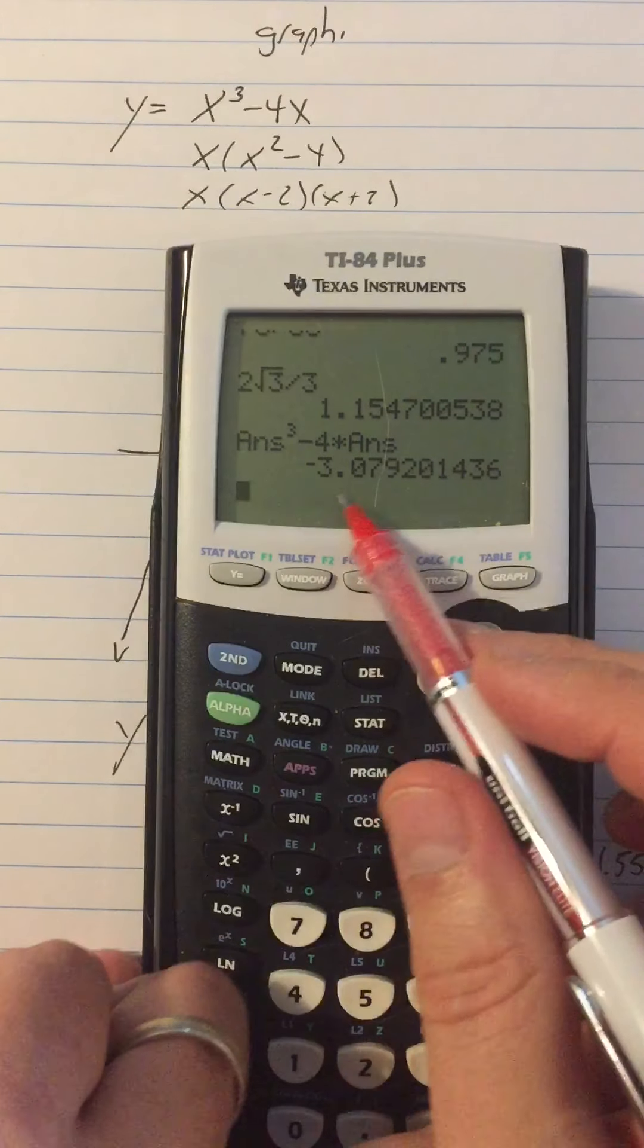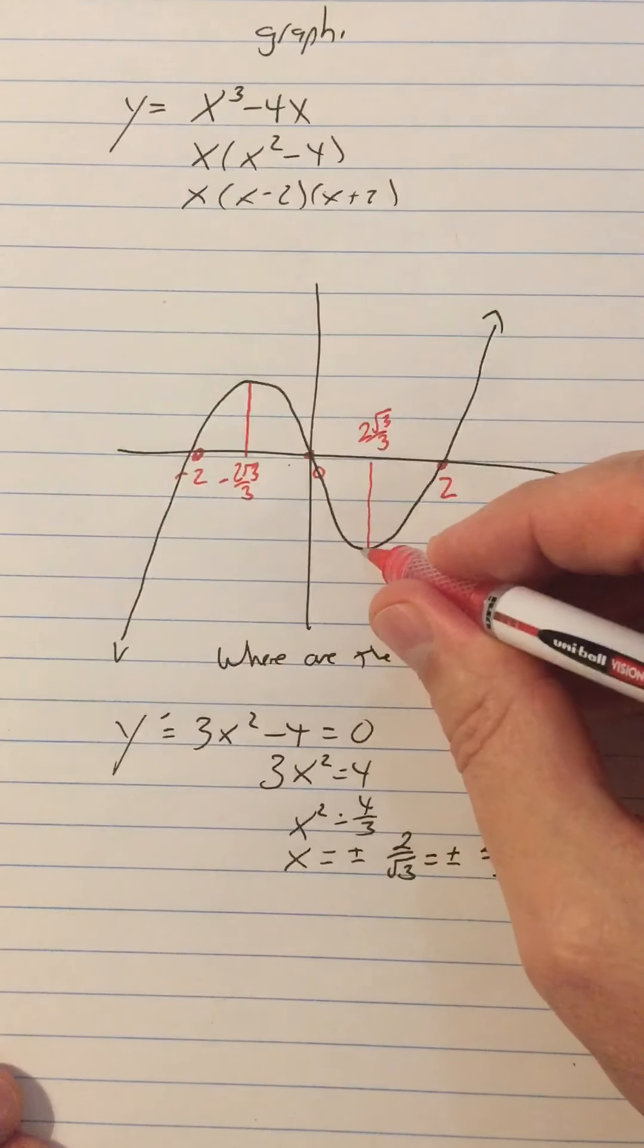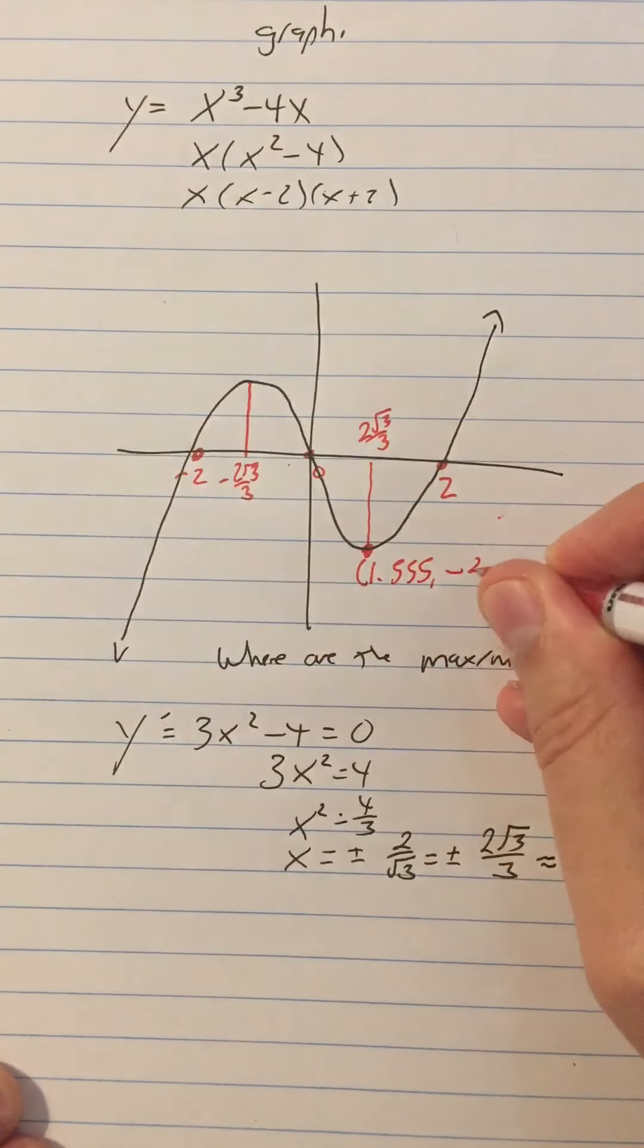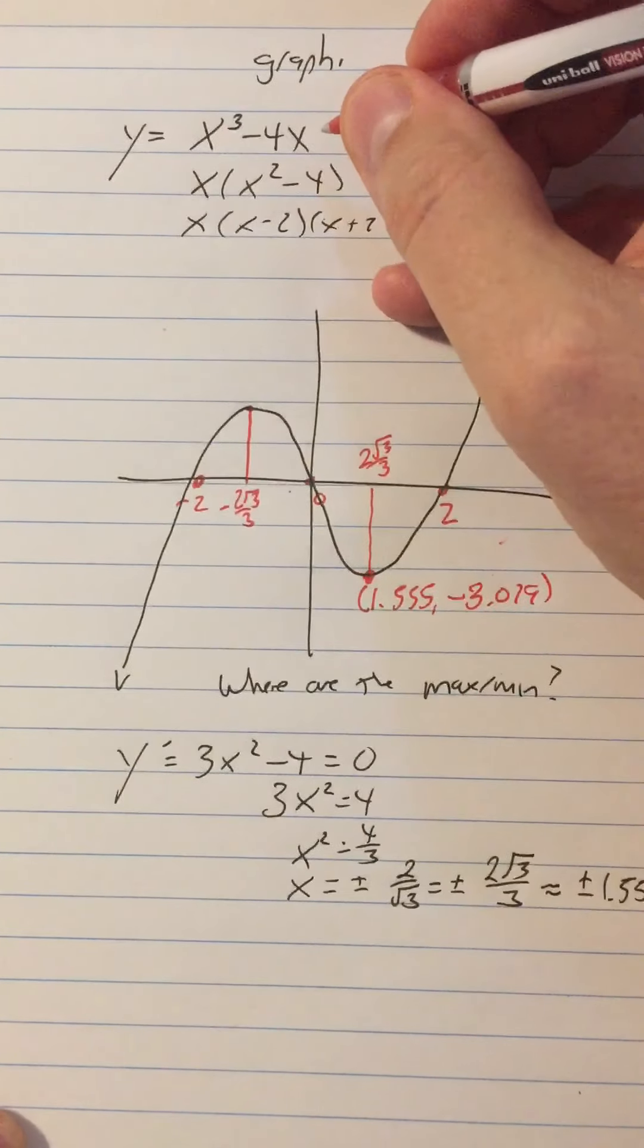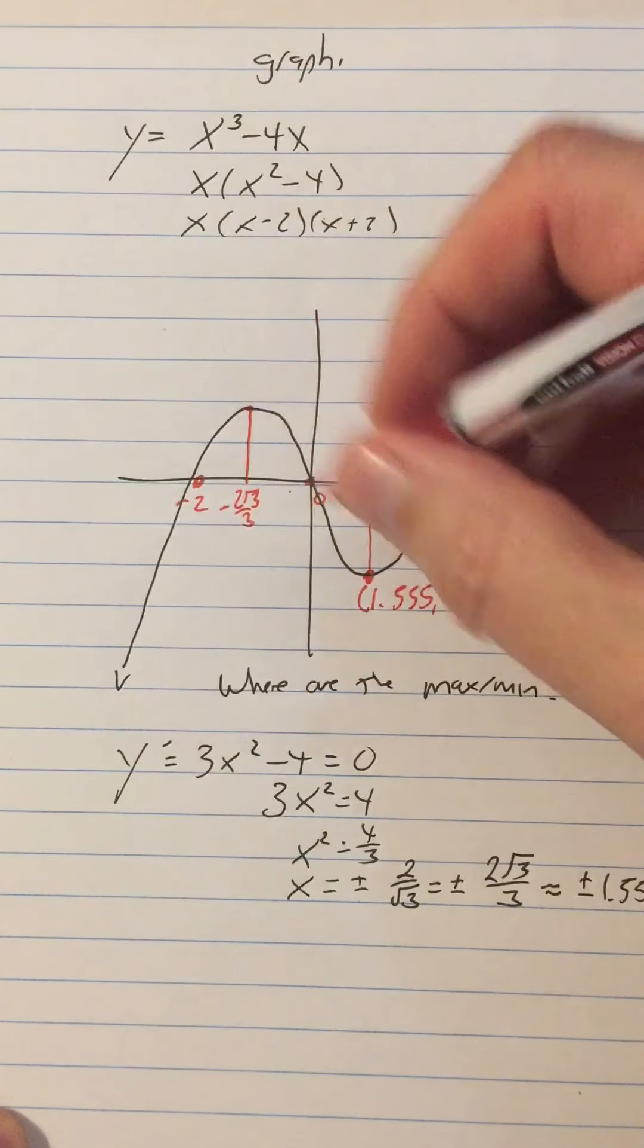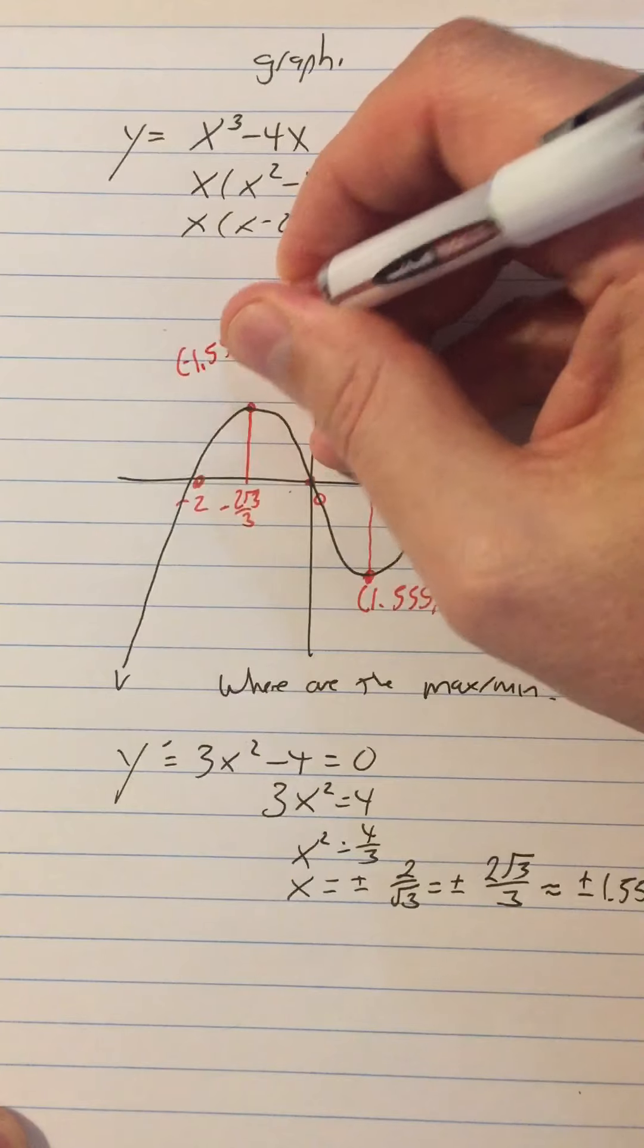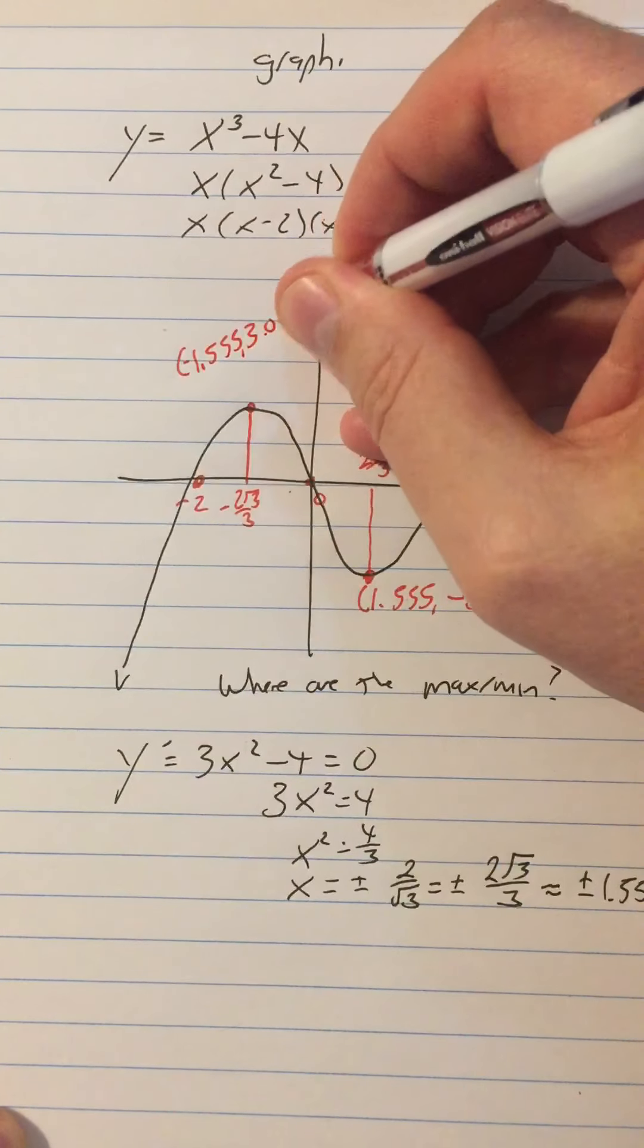That's where the min is, negative 3.079. So now I know this point is approximately 1.55, negative 3.079. And this point, since this is an odd function, it has to be symmetric with respect to the origin. So this point over here has to be negative 1.555, positive 3.079.